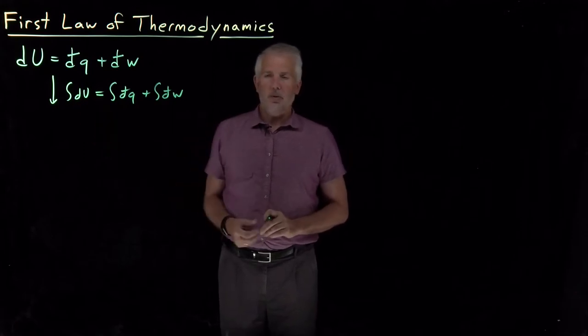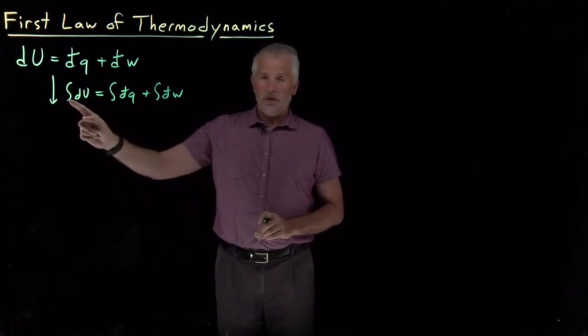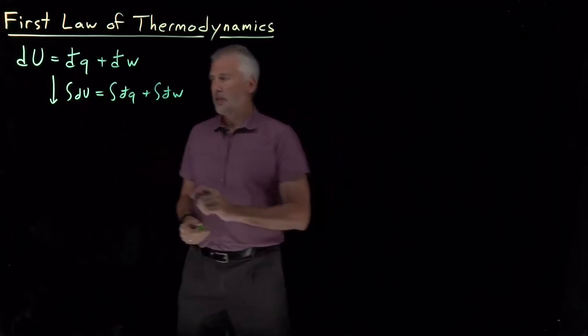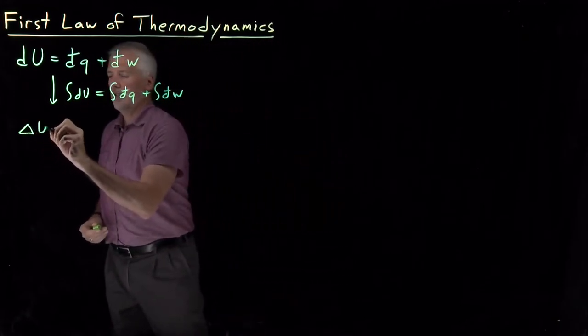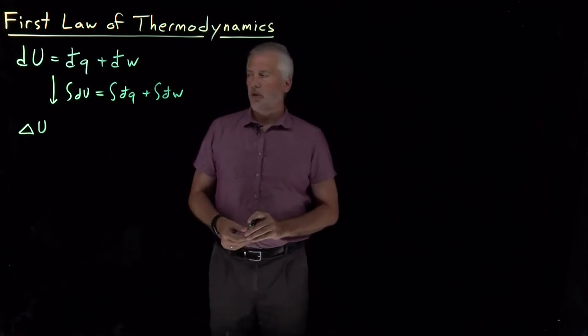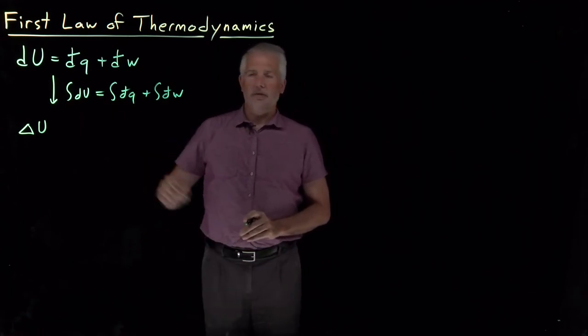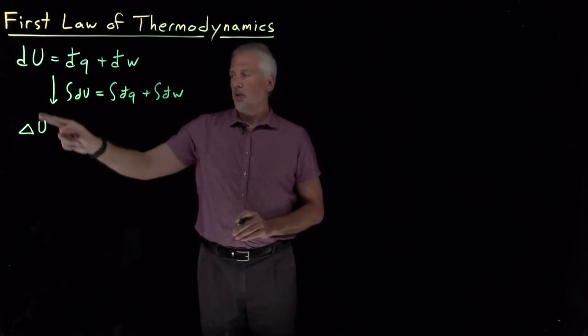Integral of dU is just U evaluated from some initial to some final conditions. That's going to give us the difference in the internal energy between the initial and final conditions. So integrate dU, I get delta U.